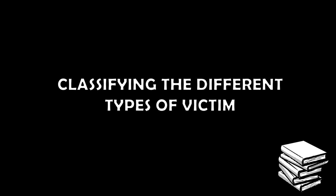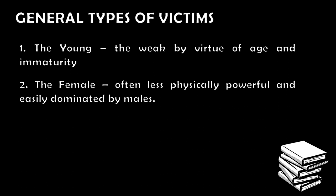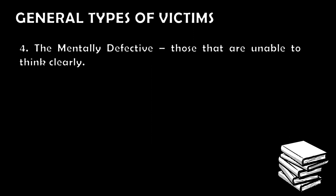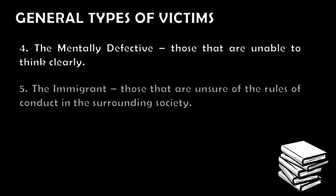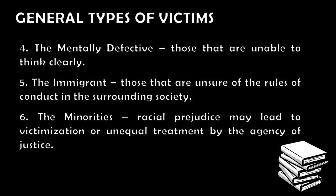Let's go to classifying the different types of victims. What are the typologies of victims? The general types include: the young — those who are weak by virtue of age and immaturity; the female — often less physically powerful and easily dominated; the old — incapable of physical defense and a common object of confidence schemes; the mentally defective — those unable to think clearly; the immigrant — those unsure of the rules of conduct in the surrounding society, usually unfamiliar with the system and therefore more easily victimized; and the minorities — racial prejudice may lead to victimization or unequal treatment by the agencies of justice.